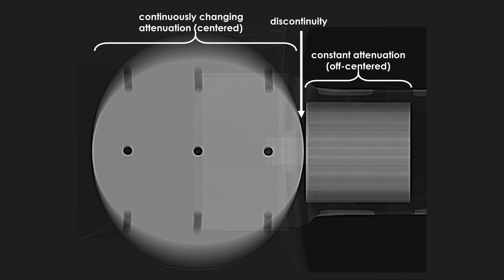Here's the scout image of the phantom setup. As you see, arranging the phantoms this way provides a dynamic target for the TCM, including a constant and a continuously changing attenuation target, as well as a discontinuity between the phantoms.